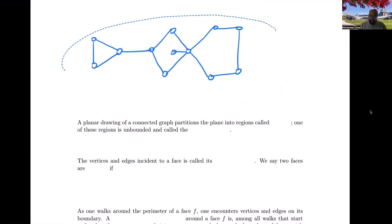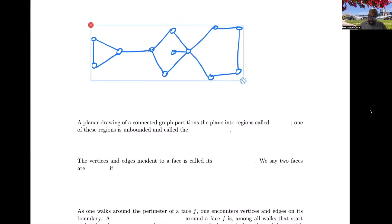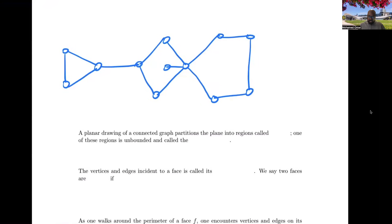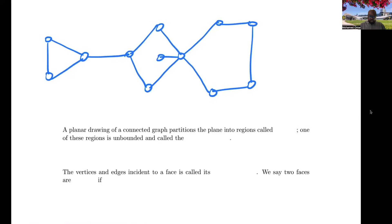Here's an example of a planar graph drawn without edges crossing. A planar drawing of a connected graph partitions the plane into regions. When you draw a planar graph, you get these little regions enclosed by edges, and then an outside region beyond all of the graph. These regions have names — they're called faces. One of these regions is unbounded, so it's called the unbounded face.